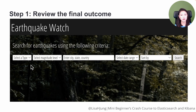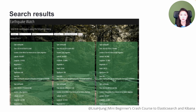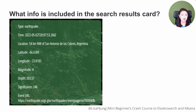Before we get started, let's review the final outcome of the app we're building. Our app allows a user to search for earthquakes — they could specify the type, magnitude, location, and date range to retrieve the data that they want. When the user clicks on the search button, the search results are displayed as cards. Each card displays information about one earthquake, including type, time, location, latitude, longitude, magnitude, depth, significance, and event URL of an earthquake.